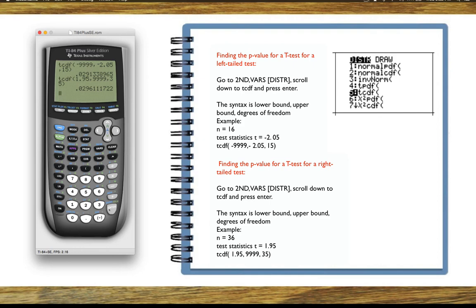That's how you find p-values for either a left tail test or a right tail test.